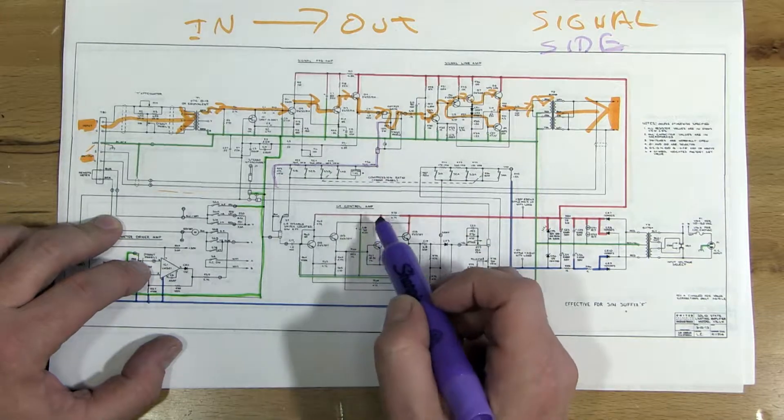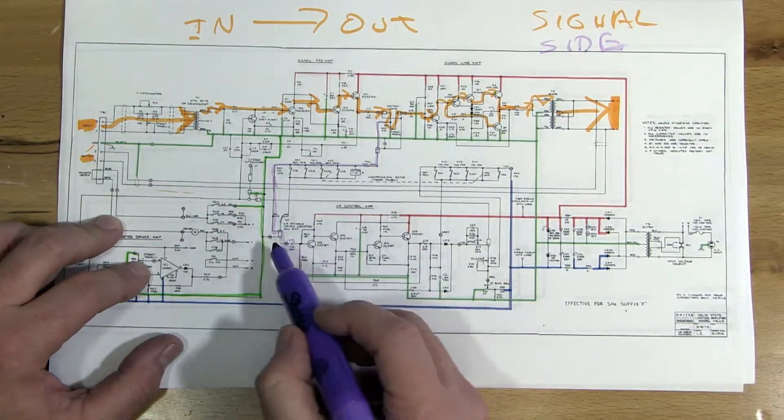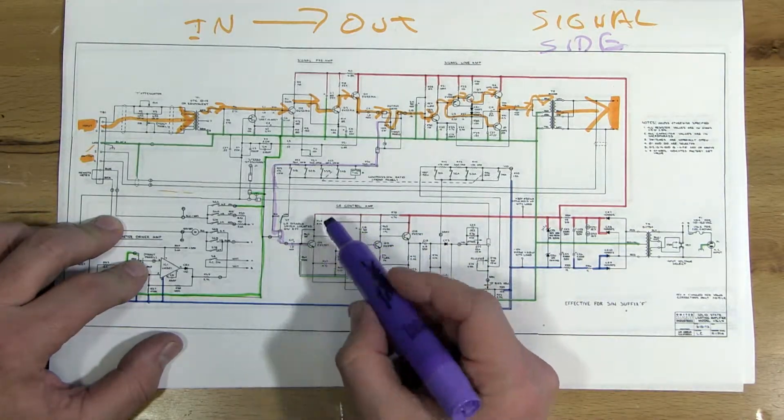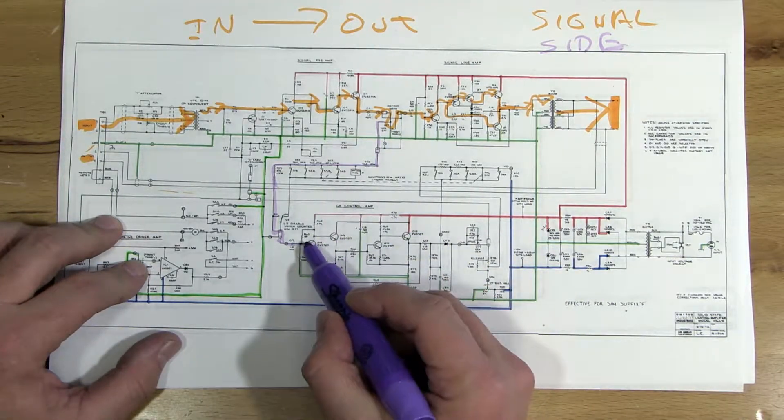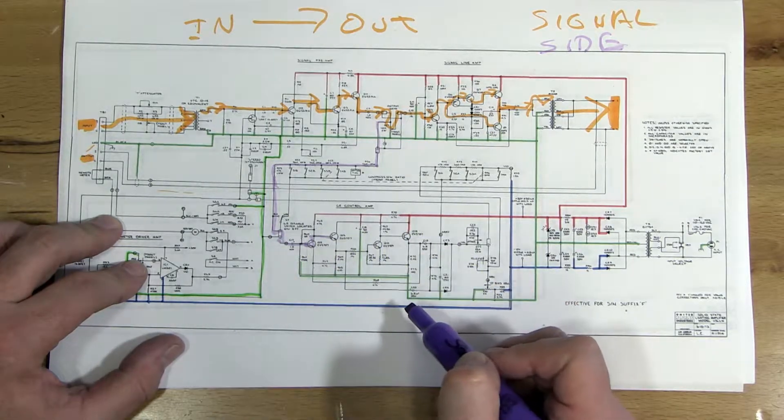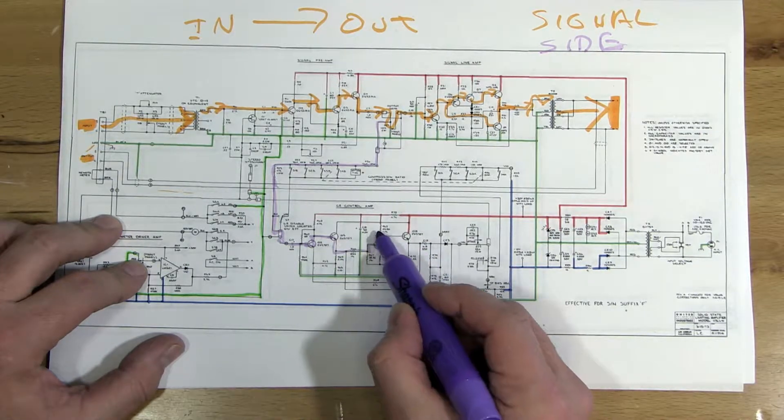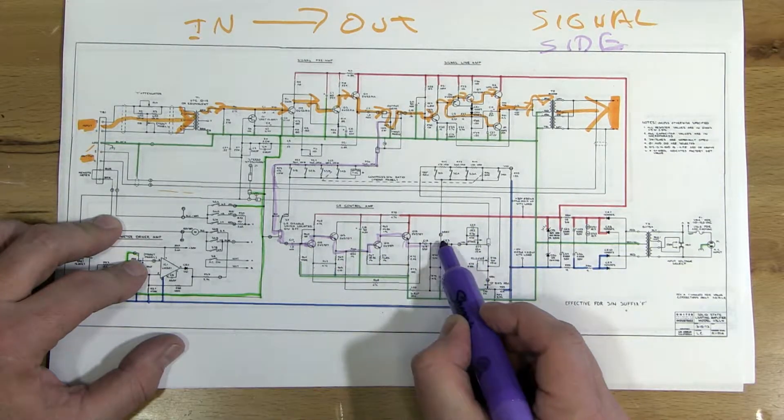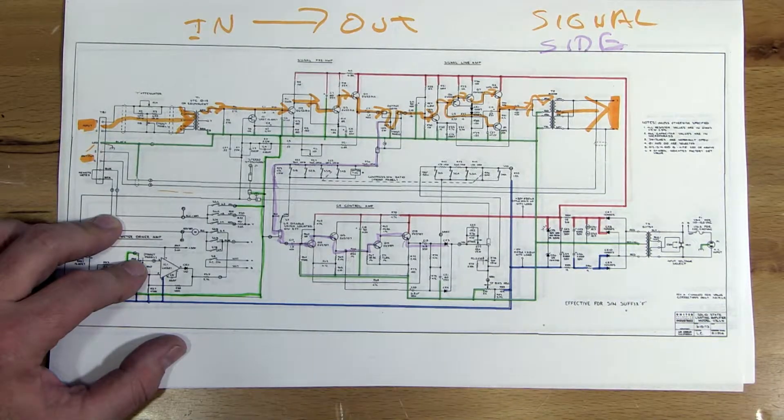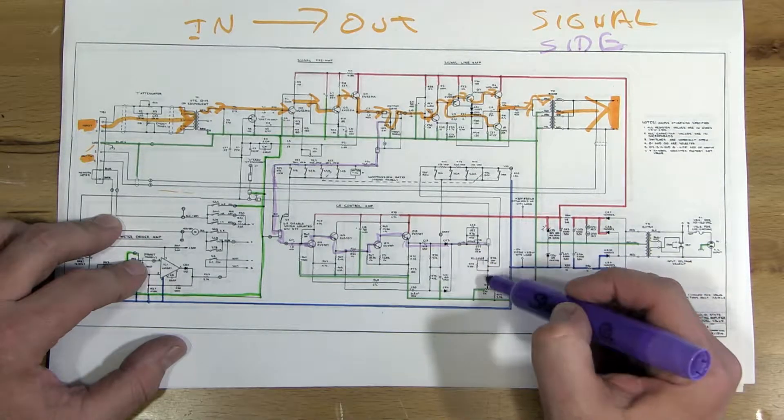And that's your threshold, or excuse me, that's your ratio control. And into another fairly simple amplifier circuit. If you're doing this whole thing, you would have already done sub-circuits for this. So you would understand how it goes.